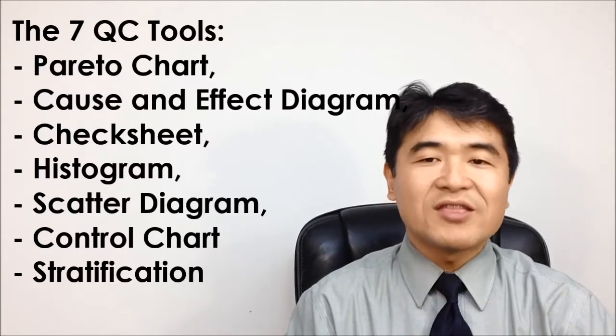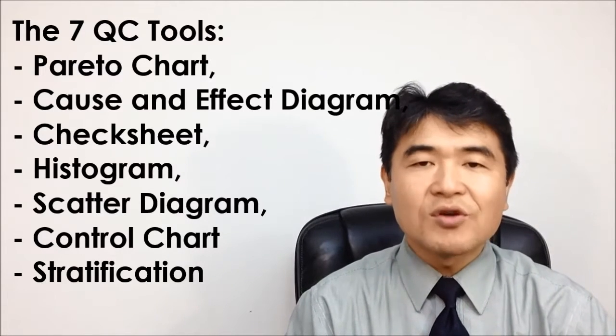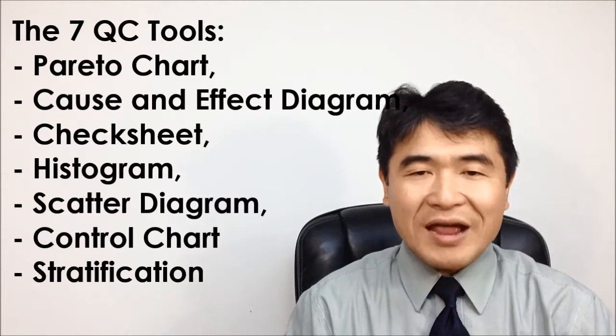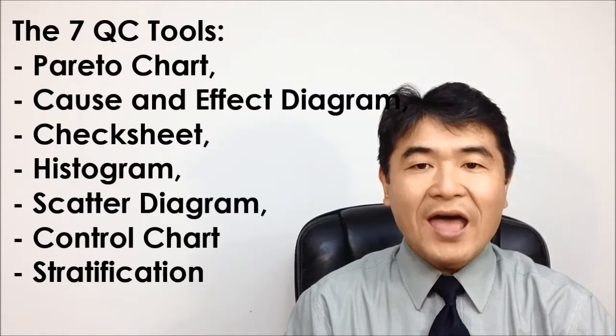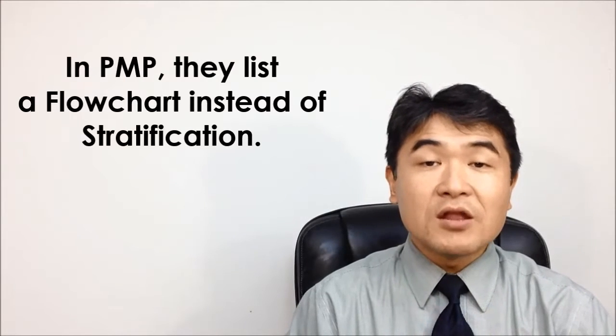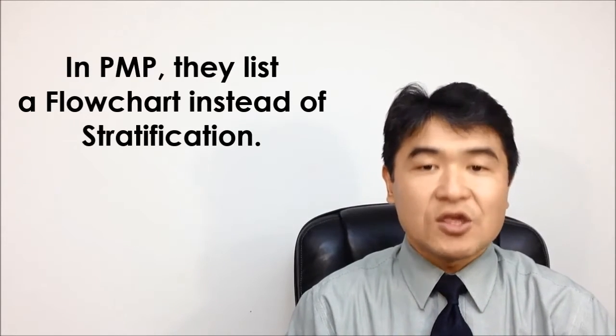The 7 QC tools consist of the Pareto chart, cause and effect diagram, check sheet, histogram, scatter diagram, control chart, and stratification. In PMP, they list a flow chart instead of stratification.